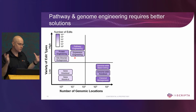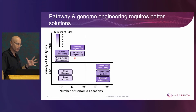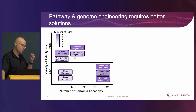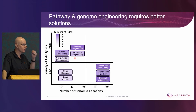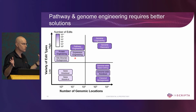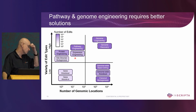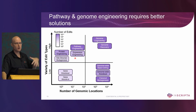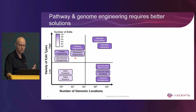On the other axis is a large variety of edit types, which is quite powerful and has been used for decades to do protein and pathway engineering, but unfortunately is limited to a small number of genomic locations. And so where we really want to go to open up genome engineering and genome discovery is in this upper right quadrant, where there's no tradeoff between genomic locations and number of edit types — we get to have our cake and eat it too.